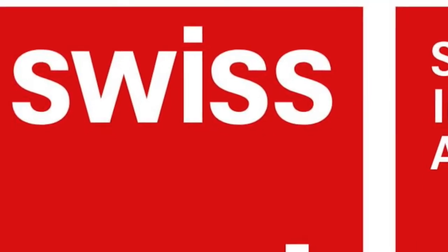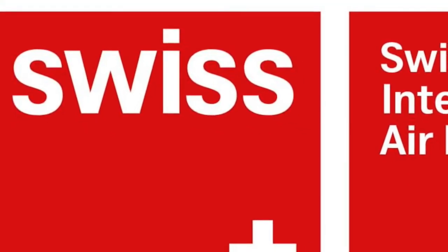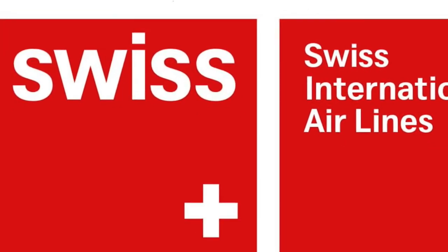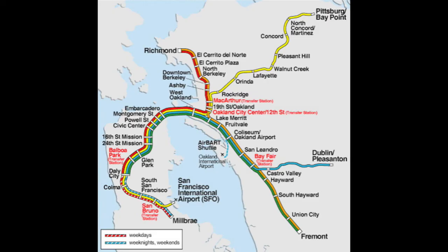Although Univers isn't as popular now, it is still widely used. Some well-known places to find Univers are the Swiss Airlines logo, San Francisco Bay Area Rapid Transit, the Montreal Metro, and the Walt Disney World Road System.